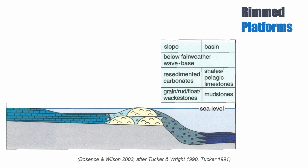The slope is more complicated because we have a lot of re-sedimented carbonates coming from the reef where wave action is very strong. The types of facies you can expect are grainstone, rudstone, floatstone, and even some wackestone. Mudstones are less common, although not impossible.